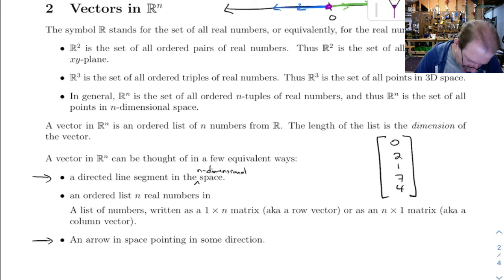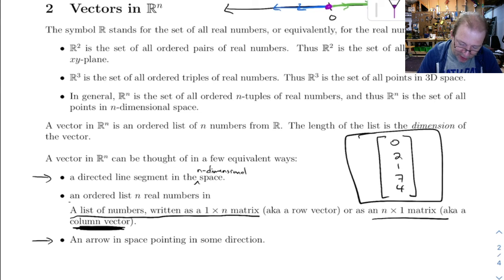And another way, you can think of it as just a list of n numbers, written as a 1 by n matrix or as an n by 1 matrix. Usually we'll go with this as an n by 1 matrix, like I did up here. So it's a column vector.